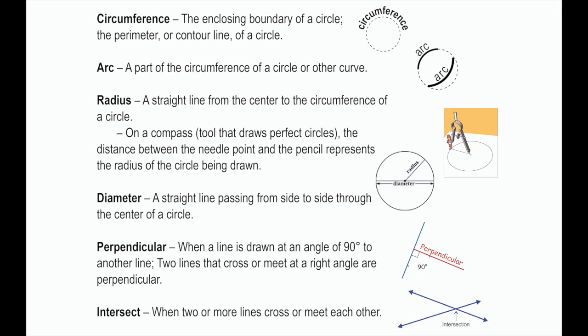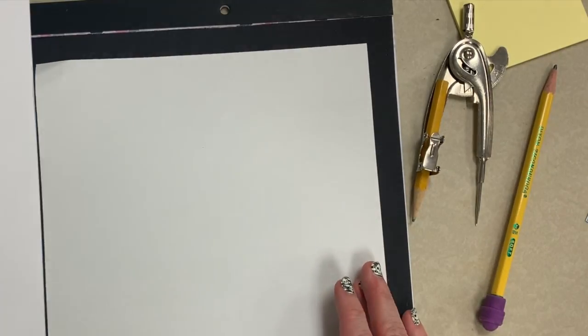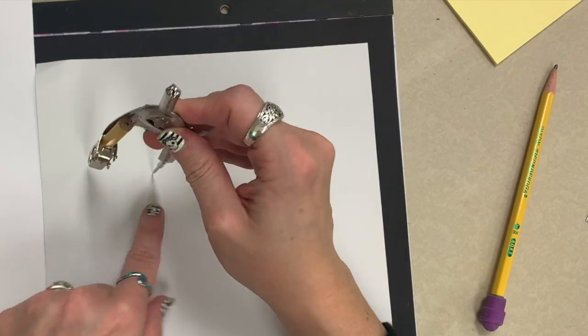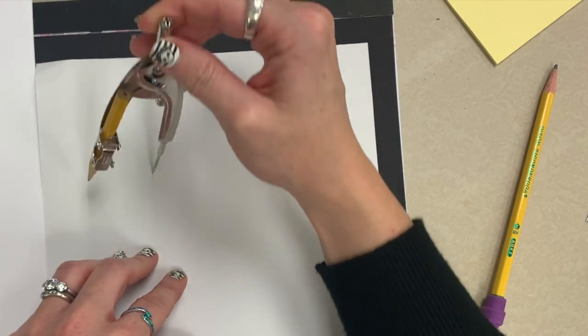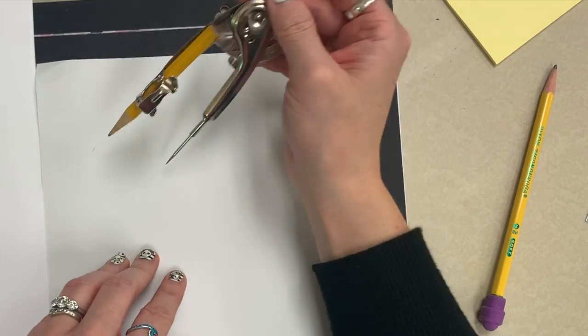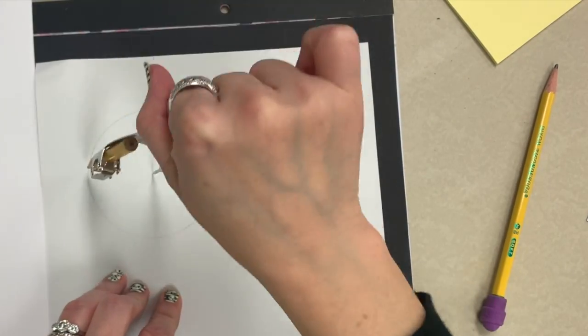And lastly, the word intersect, or an intersection, is when two or more lines cross or meet each other. To begin, put the needlepoint of the compass on your paper. This will be the center of your circle. Put your hands on the cylinder at the top of the compass and rotate your fingers to make a circle.